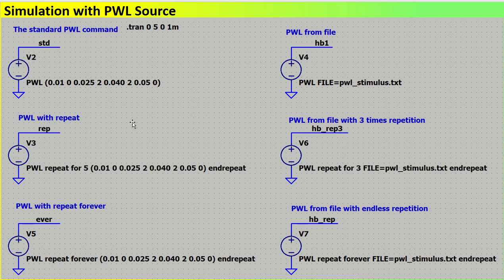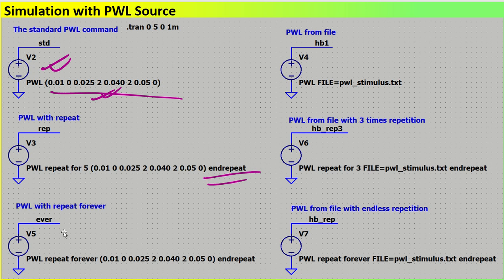Let's understand the commands. For a source defined as V2, we can use 'pwl file' to define it. Another option is to repeat it — for example, write 'pwl repeat for 5' or 'repeat for 10', and end the statement with 'end'. For repeat forever, write 'repeat forever' and then 'end repeat'. So one waveform you have defined can be repeated five times or repeated forever.